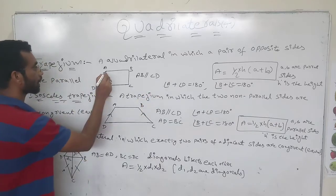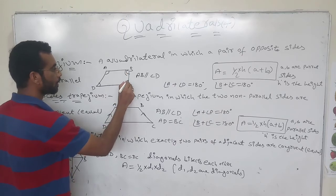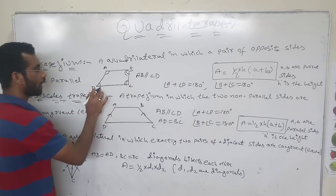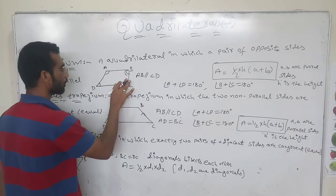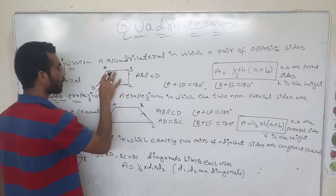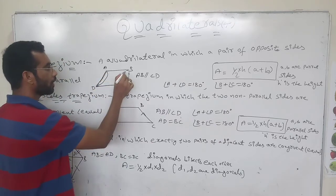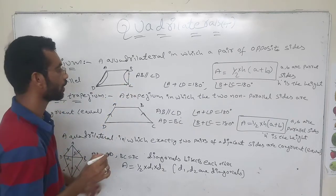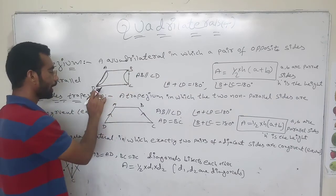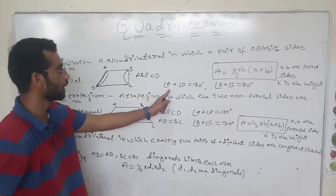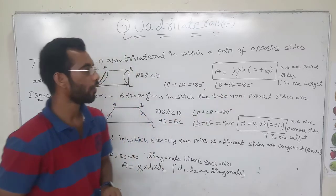The adjacent angles have a special property: angle A plus angle D equals 180 degrees, and angle B plus angle C equals 180 degrees. So if you take the sum of these co-interior angle pairs, each should be 180 degrees.